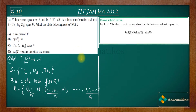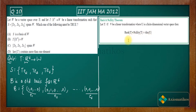Let me state the rank-nullity theorem: if T: U → V is a linear transformation where U is a finite dimensional vector space, then rank(T) + nullity(T) = dim(U). I'm showing you this because one of the options actually requires it.